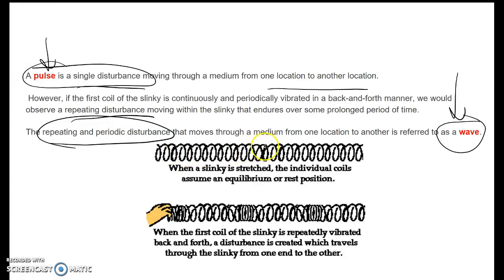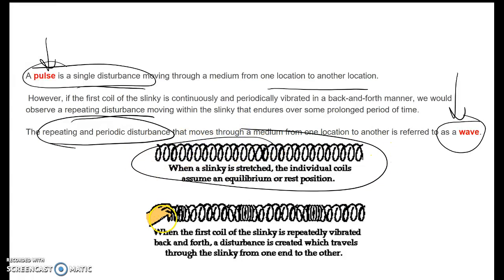Here's the equilibrium or rest position of the slinky. Once we apply a back and forth motion, we get a pulse or a wave being formed — a pulse if it's a single disturbance, and a wave if it's a repeating disturbance.